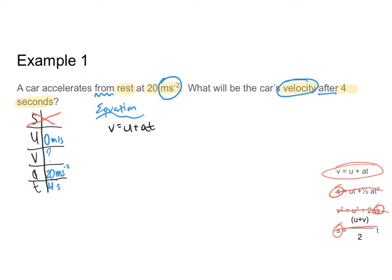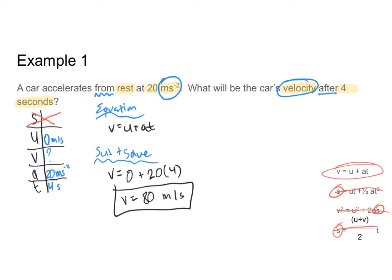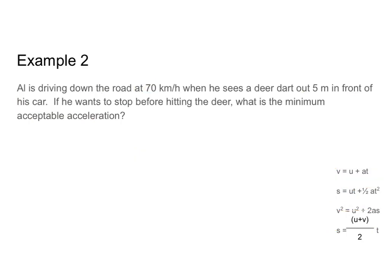So my equation is v = u + at. You will always have access to these equations on an assignment — you don't need to memorize them. Substituting in: final velocity is my unknown, initial velocity is 0, acceleration is 20, and time is 4 seconds. That gives me a final velocity of 80 meters per second. And that's example one.